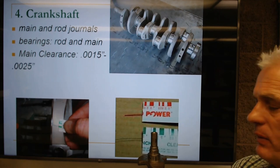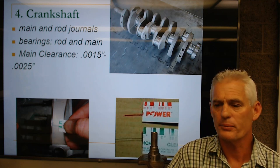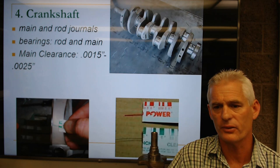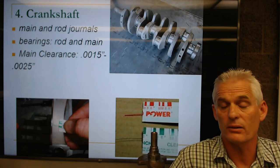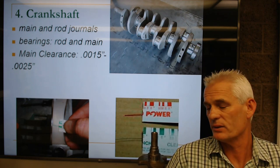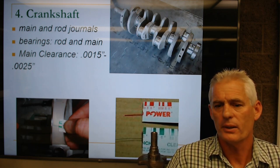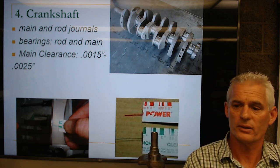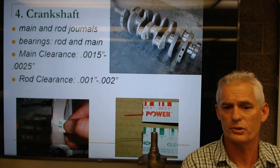Main clearance is anywhere from one and a half to two and a half thousandths. That's the clearance of oil that allows a pressurized sheet of oil so the crank journal is not touching the bearing but floating on it. If oil pressure is roughly 60 to 65 psi at 3,000 RPM, we've got oil filling up that clearance — spinning the crankshaft on a pressurized sheet of oil. Having no contaminants and keeping the oil clean is critically important.